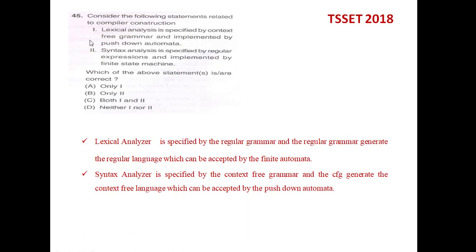He has given two statements: statement one is about the lexical analyzer and statement two is related to the syntax analyzer. In compiler construction we have six phases: the lexical analyzer, syntax analyzer, semantic analyzer, intermediate code generation, code optimization, and target code generator. Among these six phases, the first two are the lexical analyzer and the syntax analyzer.